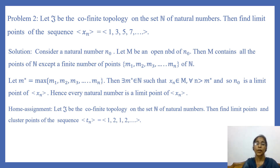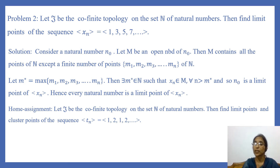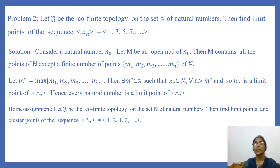For a home assignment: let T be the co-finite topology on the set N of natural numbers. Find the limit points and cluster points of the sequence T_n = 1, 2, 1, 2, ... (alternating terms 1 and 2). Thank you.